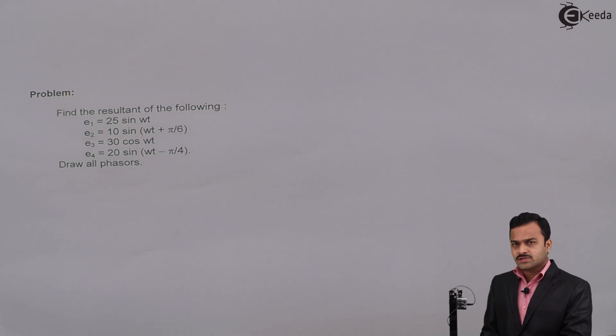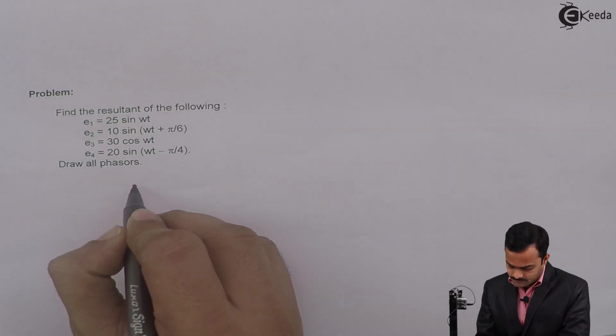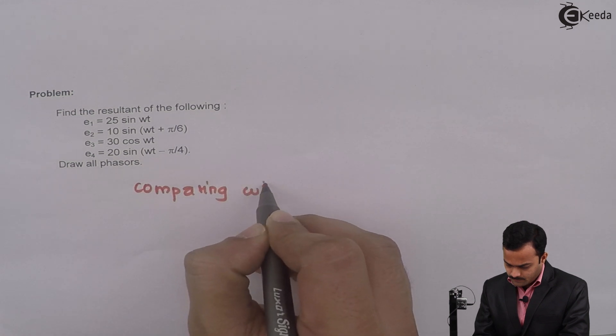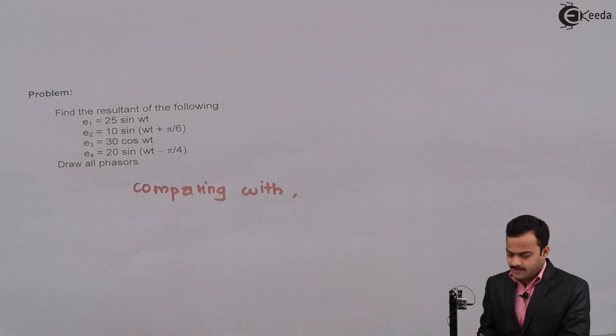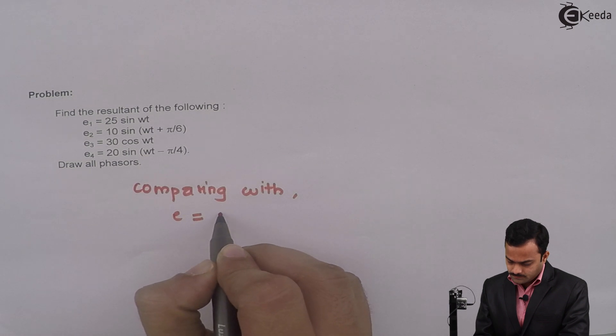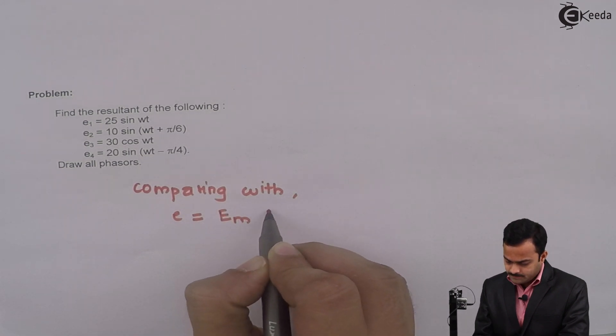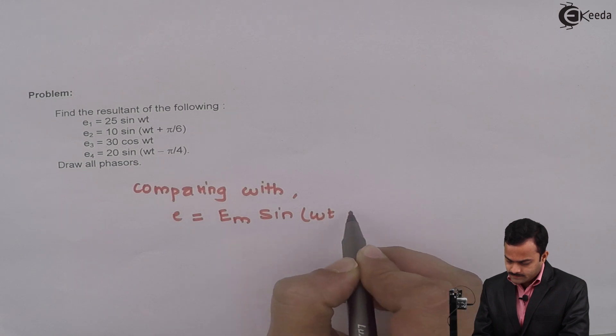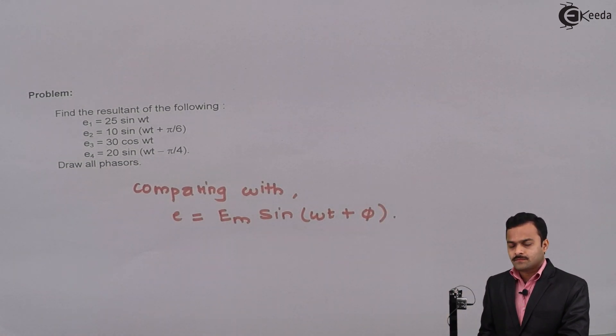How to start? One thing to keep in mind: all these are the equations of a standard sinusoidal waveform. So first step, we have to compare these equations with standard sinusoidal waveform. So I am comparing with E = Em sin(ωt + φ). Make sure that all the waveforms or equations given should have this form: sine ωt plus φ.